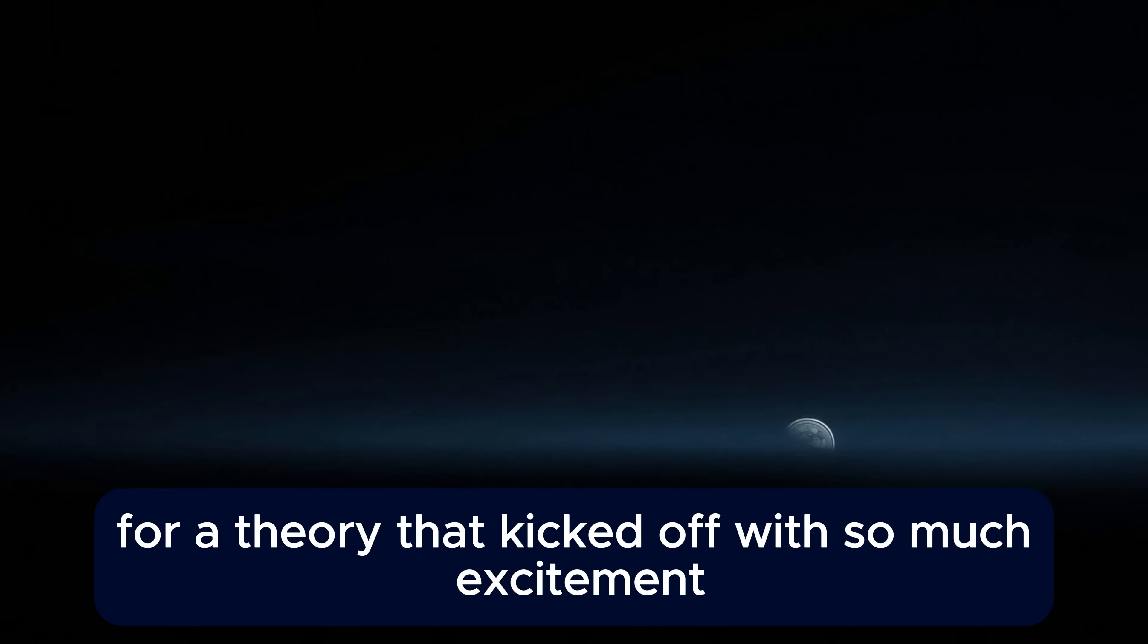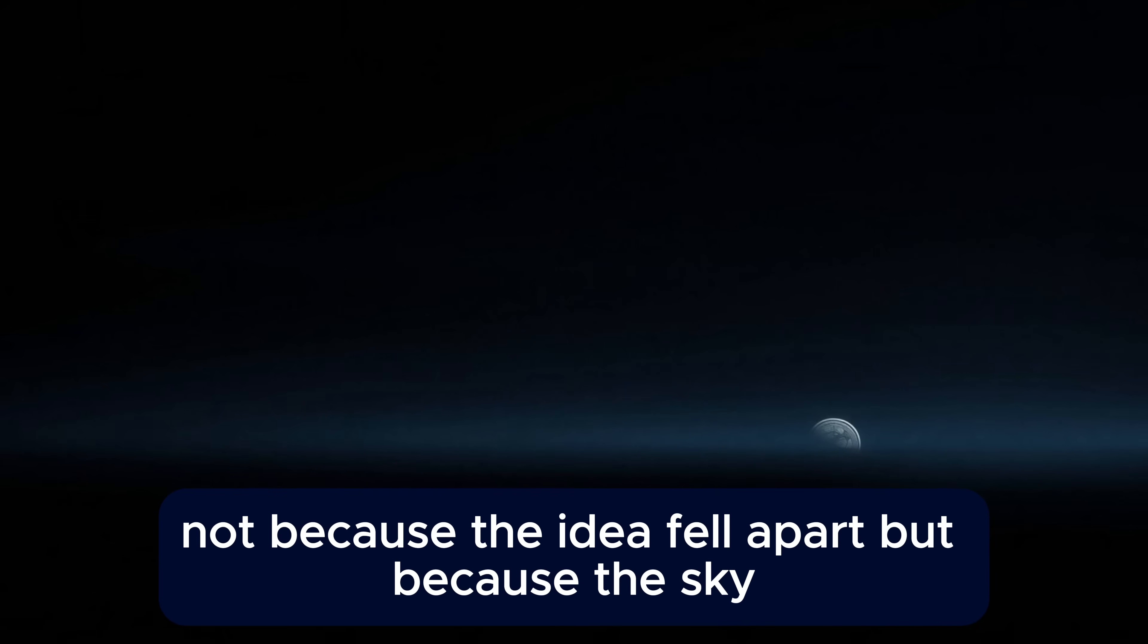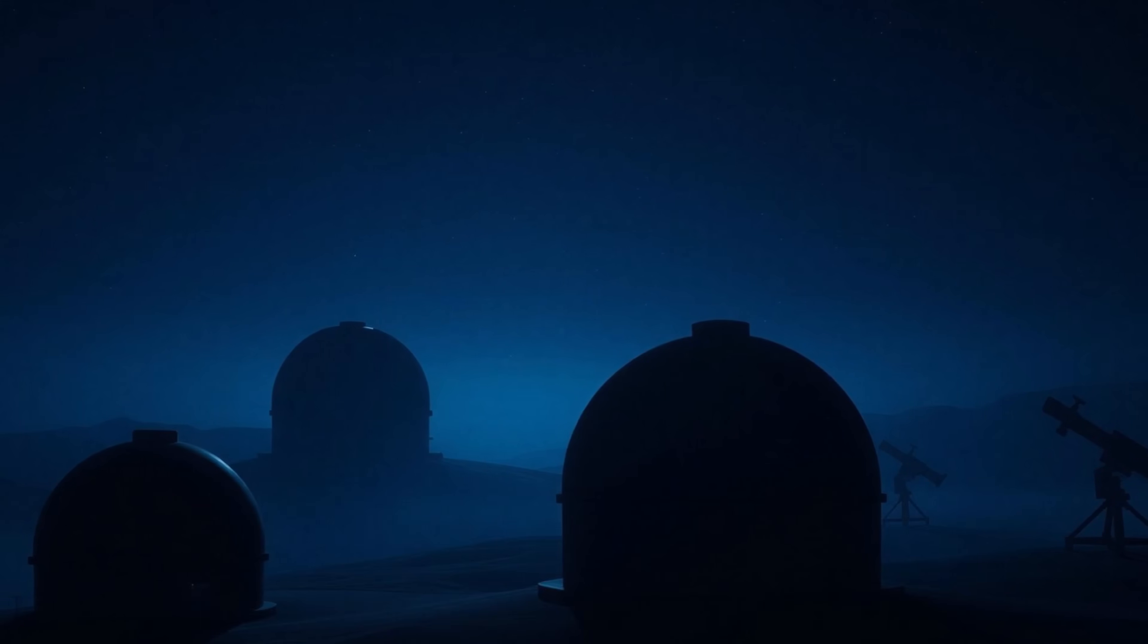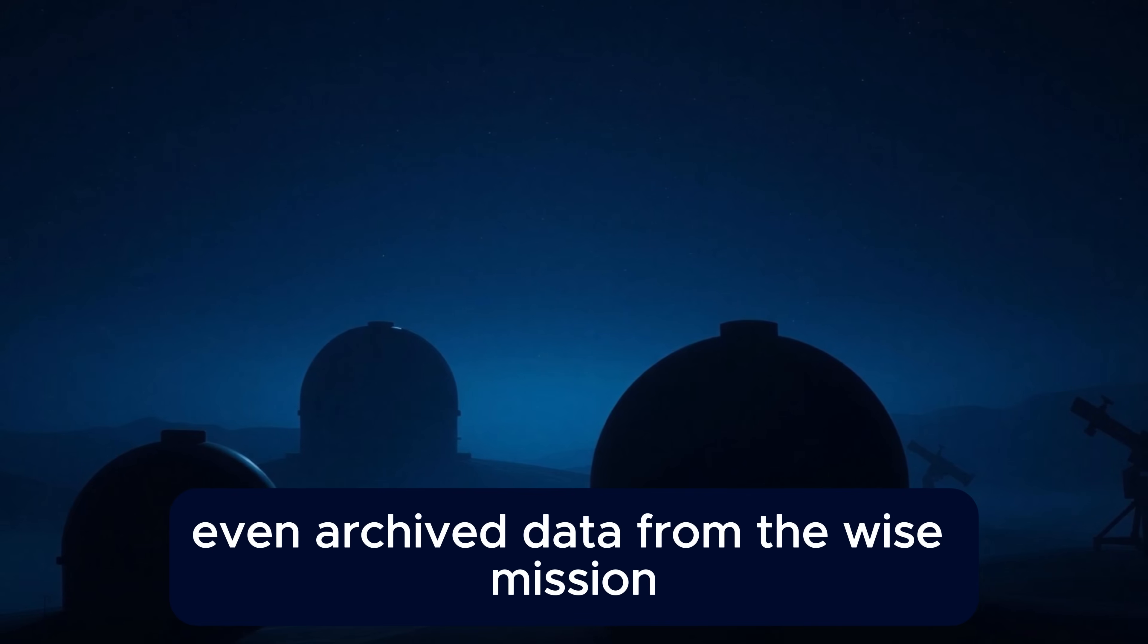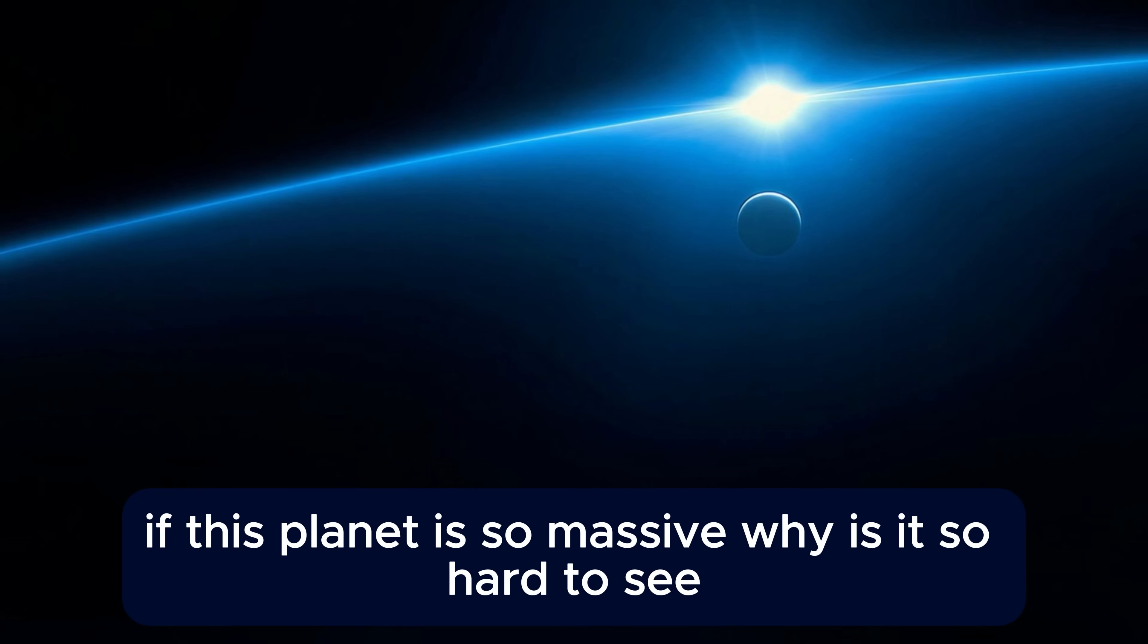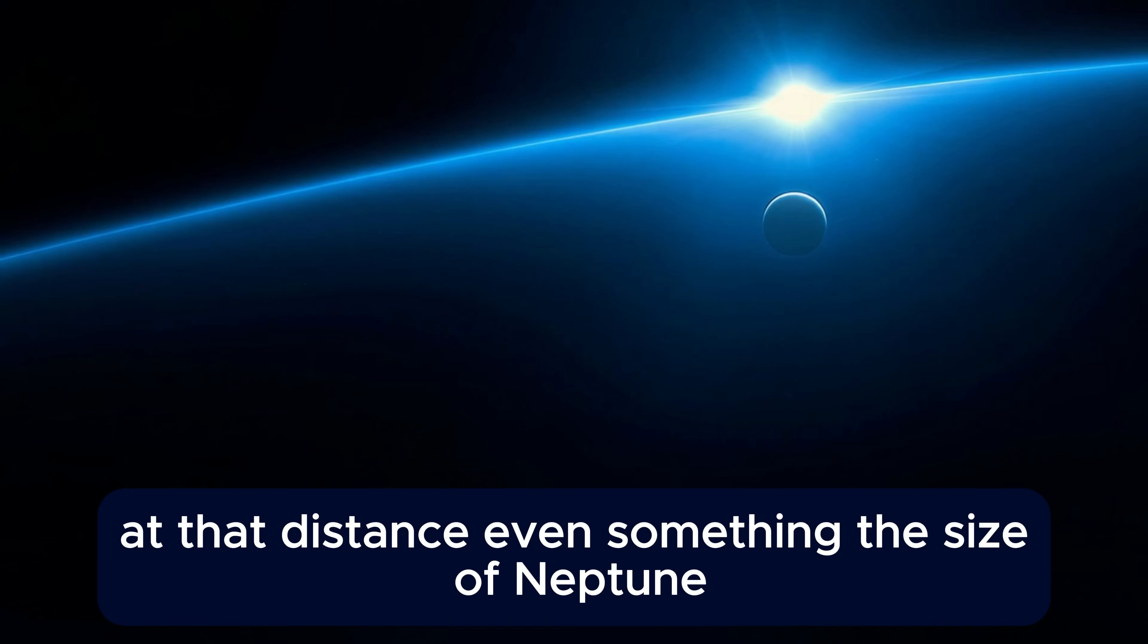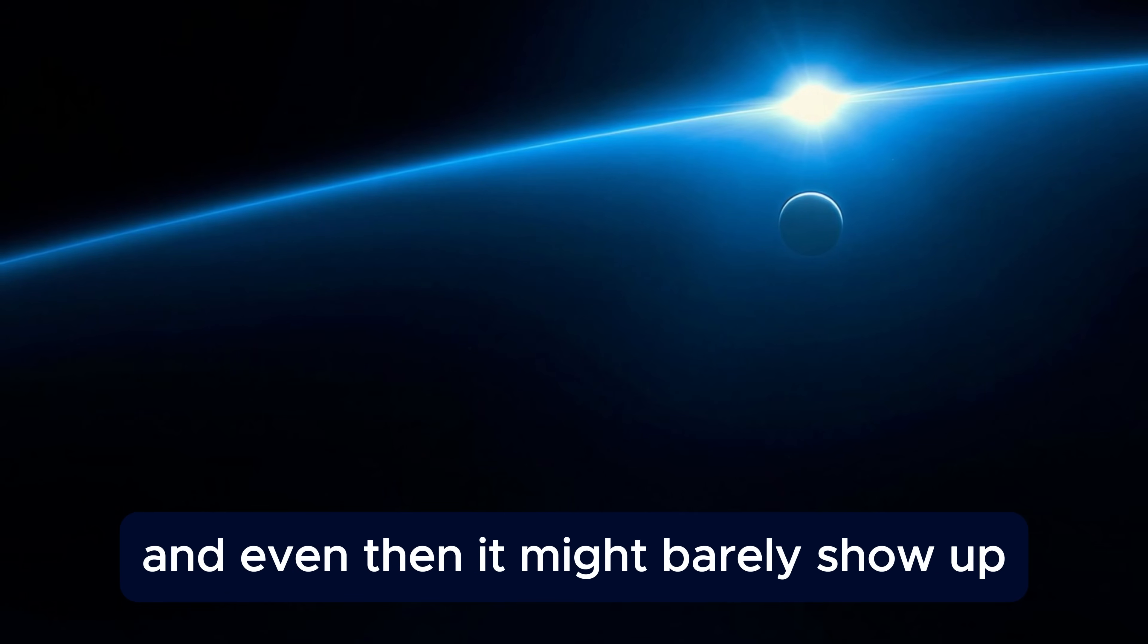After the 2016 announcement, astronomers everywhere began scanning the predicted areas. They used some of the best tools available: Pan-STARS, the Subaru Telescope, the Dark Energy Survey, even archived data from the WISE mission, and they found absolutely nothing. But why? If this planet is so massive, why is it so hard to see? Well, think about it. If Planet 9 exists, it's hundreds of times farther from the Sun than Earth. That means it reflects almost no sunlight. At that distance, even something the size of Neptune would be incredibly dim. You'd need to know exactly where to look. And even then, it might barely show up.